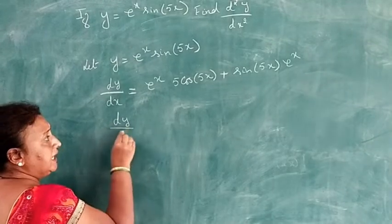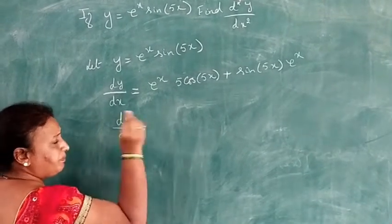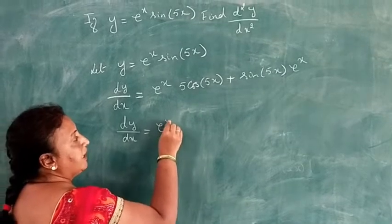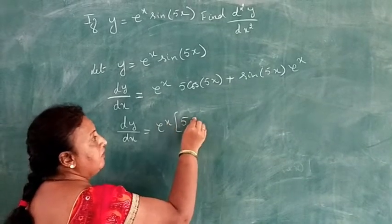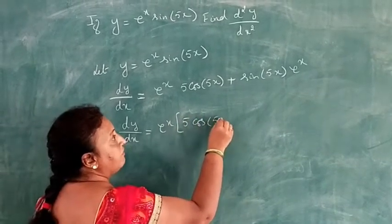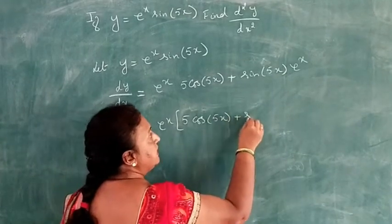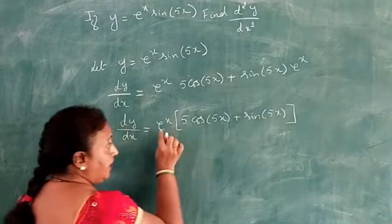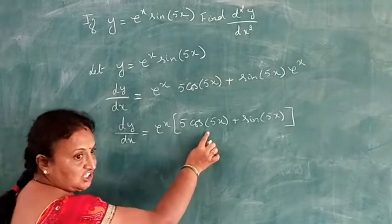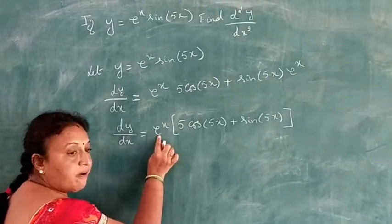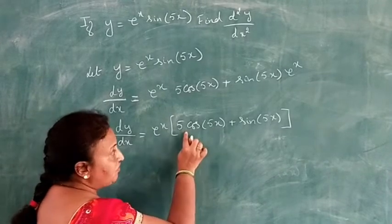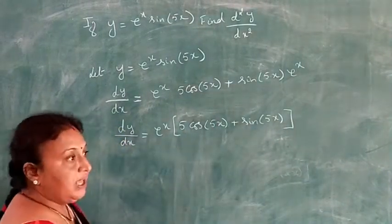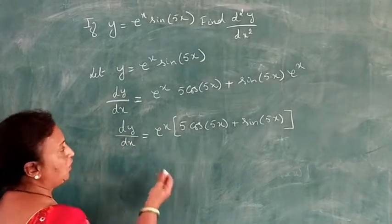Rearranging dy/dx: equals e to the power x common factor, into 5 cos 5x plus sin 5x. Again this is a product of two functions — first function e to the power x and second function 5 cos 5x plus sin 5x — so differentiate again with respect to x.